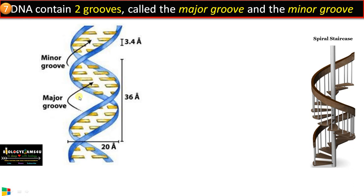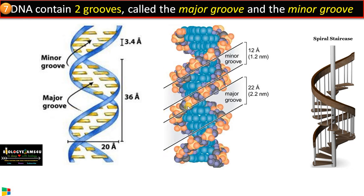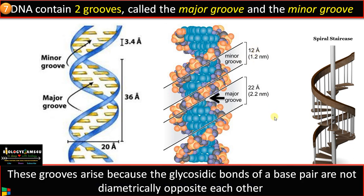When the phosphate-sugar backbone strands are very close together, that forms the minor groove; when they are far apart, that forms the major groove. The major groove is wide — 22 Å in B-DNA — and deep, whereas the minor groove is narrow at 12 Å. These grooves arise because the glycosidic bonds of a base pair are not diametrically opposite, and the major groove is important in DNA-protein interactions.